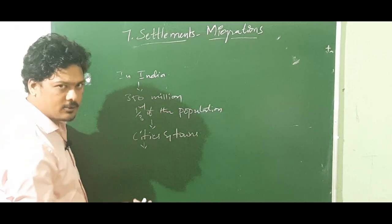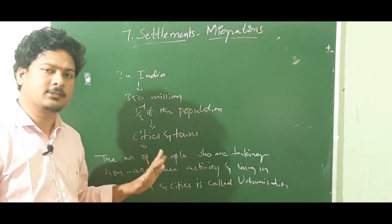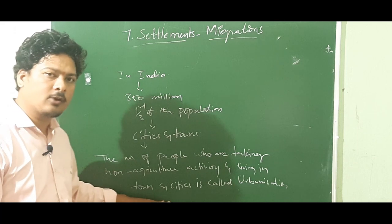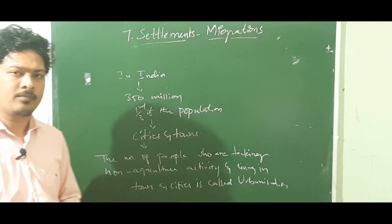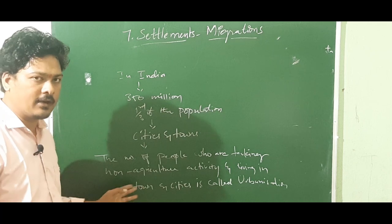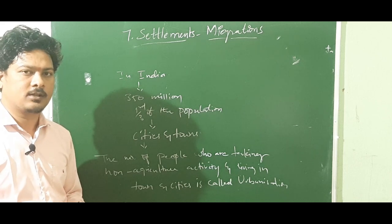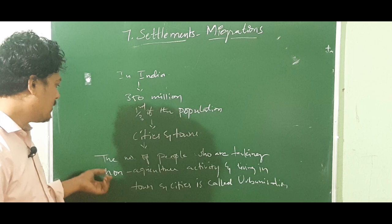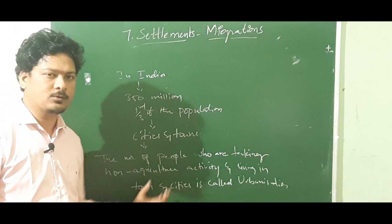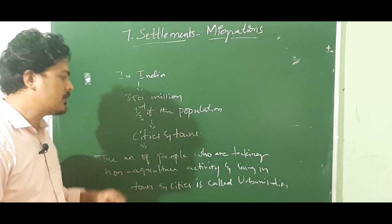Now, what is urbanization? The number of people who are leaving agriculture and taking up non-agriculture activity, and going to live in towns and cities, is called urbanization. Generally in towns and cities you cannot find agriculture activity. So the people who are taking up non-agriculture activity and living in towns and cities — that is called urbanization. This is an important two-marks answer.